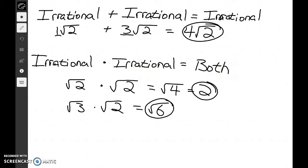So here we can see that irrational times irrational actually gives us both. Sometimes it'll be one, sometimes it'll be the other. That's the only real instance where they kind of clash is with irrational times irrational. Everything else is pretty set in stone. Irrational plus irrational just gives you a bigger irrational number. But irrational times irrational will give you both rational and irrational.